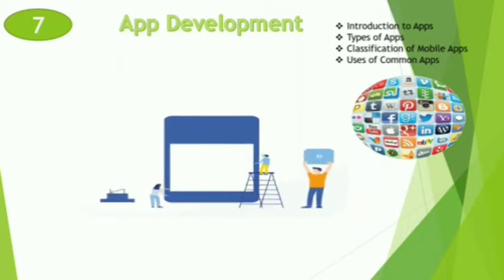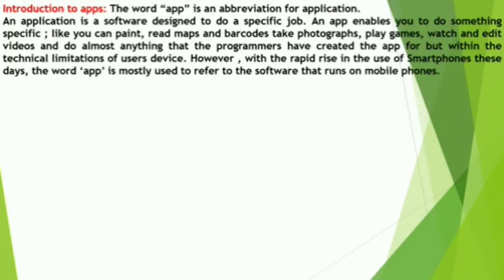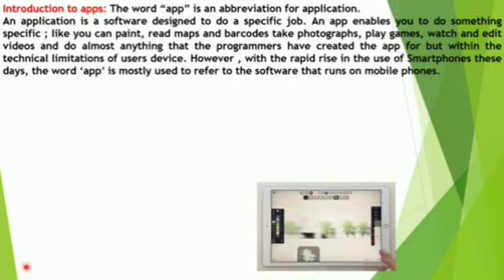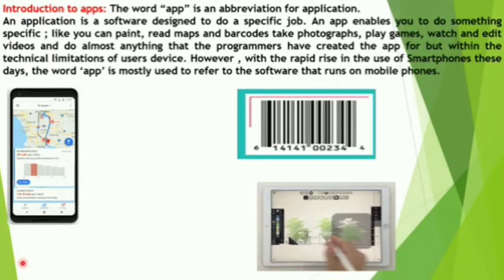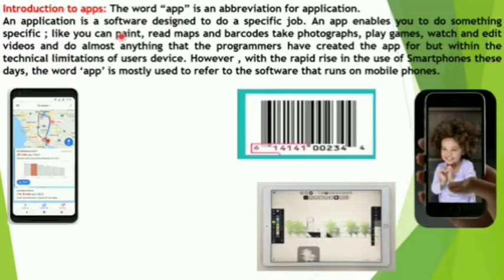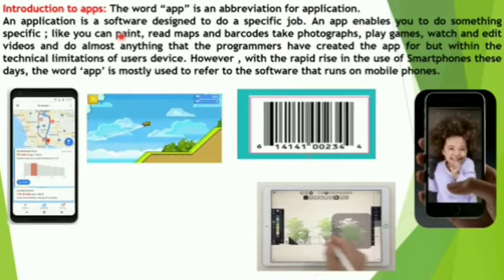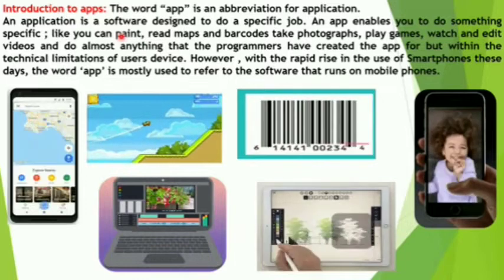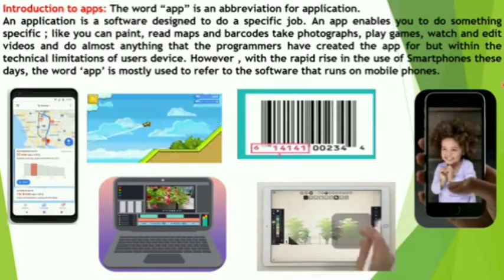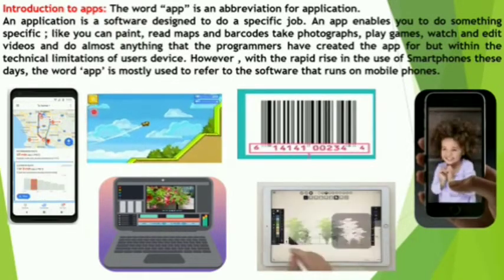First, come to the Introduction to Apps. The word App is an abbreviation for Application. An application is a software designed to do a specific job. An app enables you to do something specific, like you can paint, read maps, read barcodes, take photographs, play games, and watch and edit videos, and do almost anything that the programmers have created the app for, within the technical limitations of the user's device.